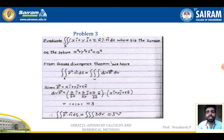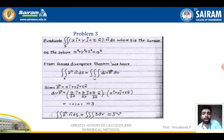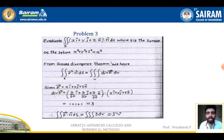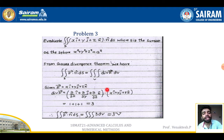Example 3: Evaluate ∬_S (xî + yĵ + zk̂)·n dS where S is the surface of the sphere x² + y² + z² = a². Using the Gauss divergence theorem: ∬ F·n dS = ∭ div F dV. Here F = xî + yĵ + zk̂, so div F = ∂x/∂x + ∂y/∂y + ∂z/∂z = 1 + 1 + 1 = 3.